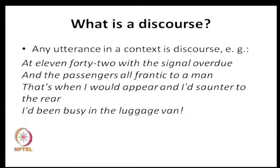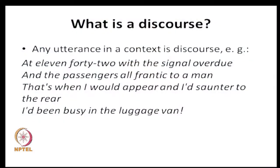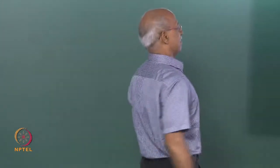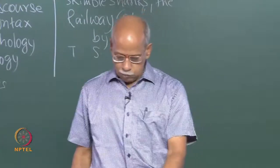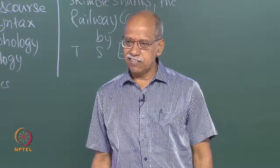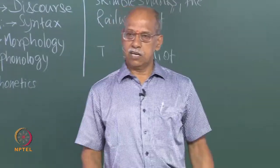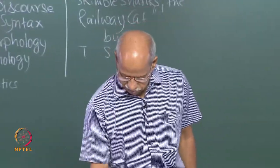You get all the information from the poem. At 11:42, with the signal overdue and the passengers all frantic, that is when the guard would appear — 'I would saunter to the rear. I had been busy.' Nobody can ask him; he is such an important person, checking the luggage van. Any utterance in a context — where, when, to whom, topic, who, what — that is discourse. It gives you entire social information.